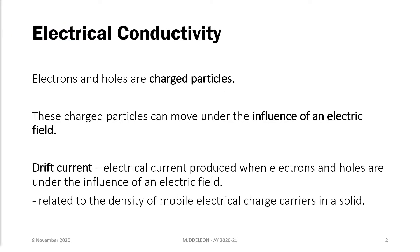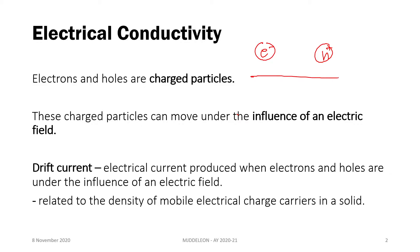Electrons and holes in semiconductors are charged particles. Since they are charged particles, they will be influenced by an external electric field. For example, if we have an electron and a hole in an electric field, the electron will move towards the positive side and the hole will move towards the negative side — that comes from Coulomb's law. The current produced by the movement of these charge carriers, electrons and holes, is our drift current.